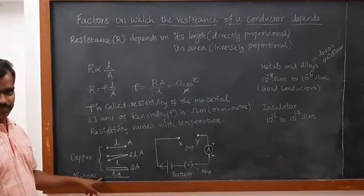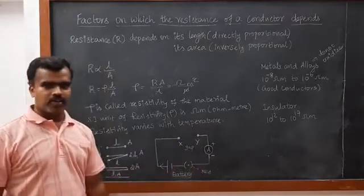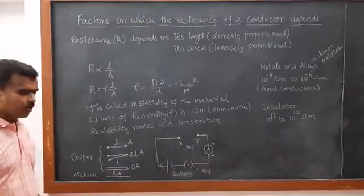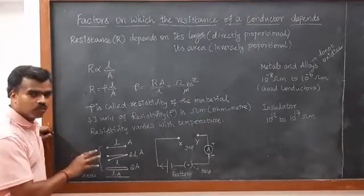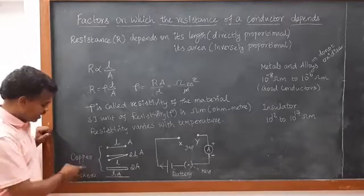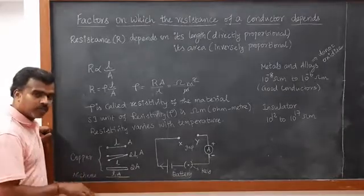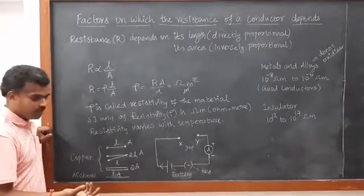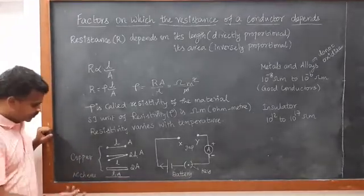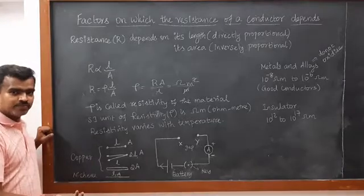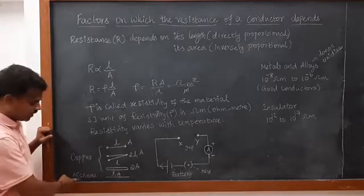Moving to the nichrome wire with 1 meter length and 1 meter squared area: comparing copper and nichrome, copper wire will give low resistivity and nichrome will give high resistivity. Due to this, copper is used in transmission lines because of low resistivity, while alloys like nichrome are used in electrical heating devices such as toasters.